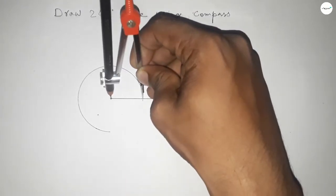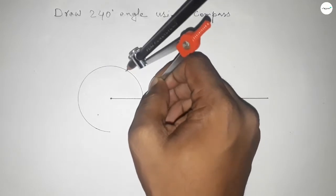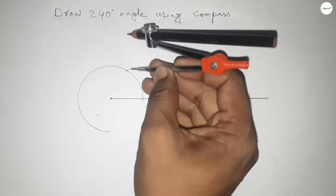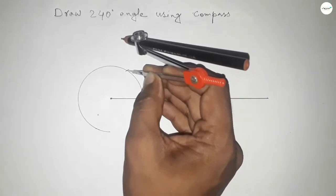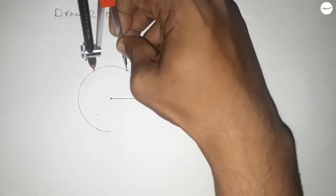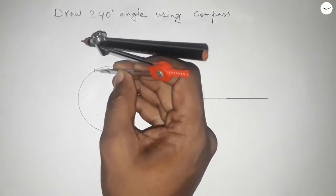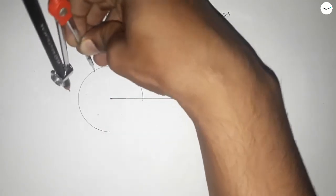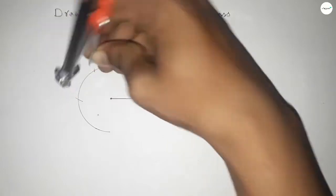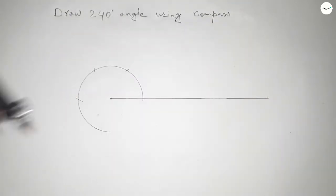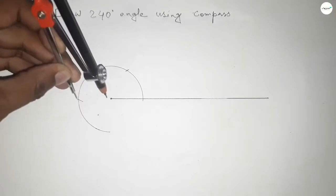Putting the compass here with same length and cut the arc here. Putting the compass here and cut here. Again with same length, putting the compass here and cut here.